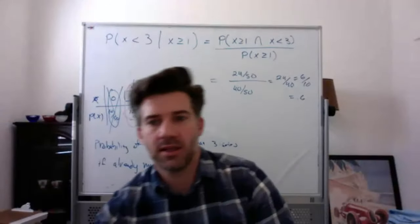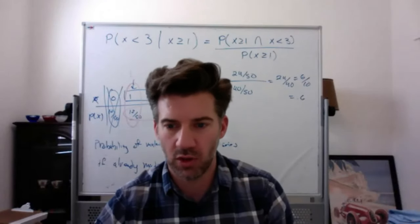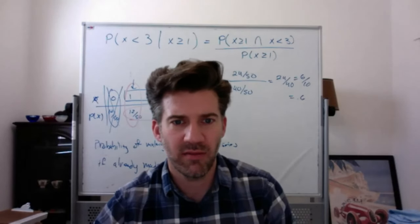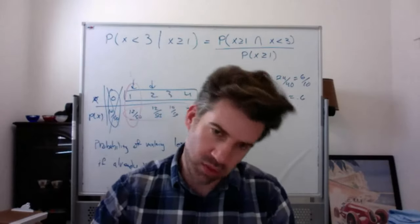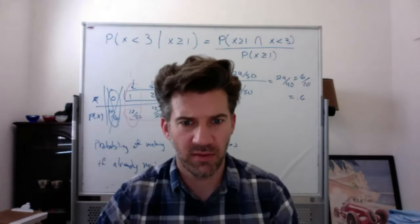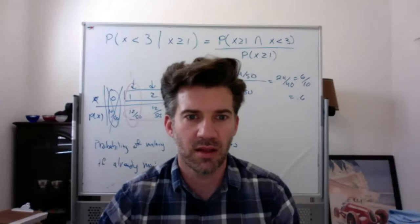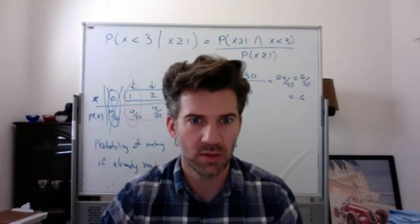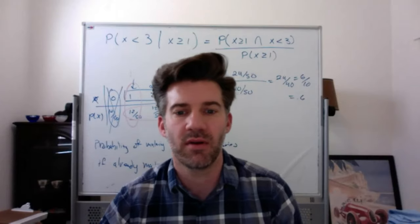Let's move to the next section: mean and variance of a random variable. We'll use the same telemarketing salesperson example. The distribution has values 0, 1, 2, 3, 4 with probabilities 10/50, 12/50, 12/50, 10/50, and 6/50.